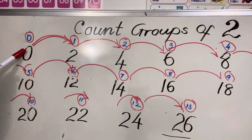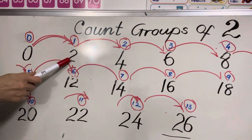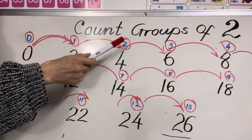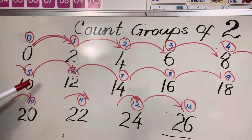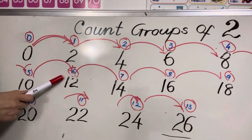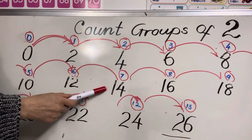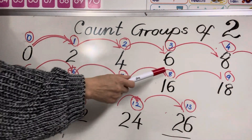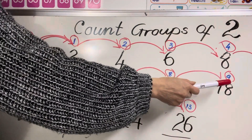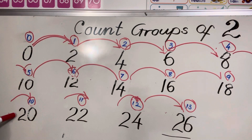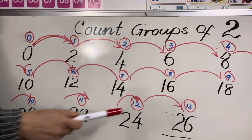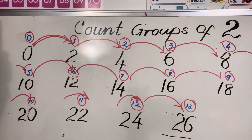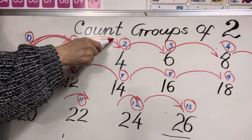Now I will say the group and you have to say the number. Are you ready? Zero groups of 2 — zero, say louder please. 1 group of 2 — two, say louder please. 2 groups of 2 — four. 3 groups of 2 — six. 4 groups of 2 — eight. 5 groups of 2 — ten. 6 groups of 2 — twelve. 7 groups of 2 — fourteen. 8 groups of 2 — sixteen. 9 groups of 2 — eighteen. 10 groups of 2 — twenty. 11 groups of 2 — twenty-two. 12 groups of 2 — twenty-four. 13 groups of 2 — twenty-six.